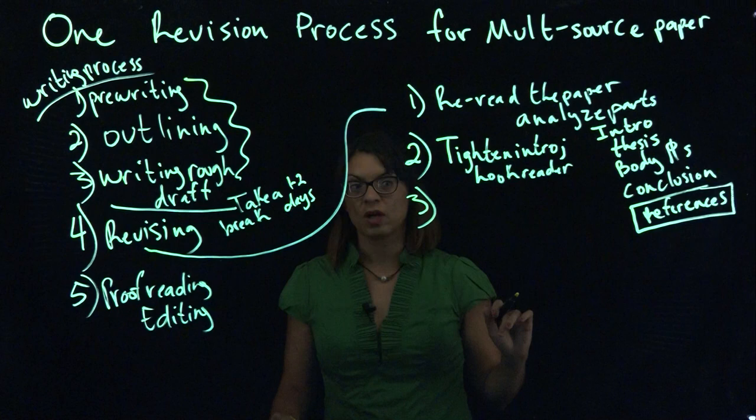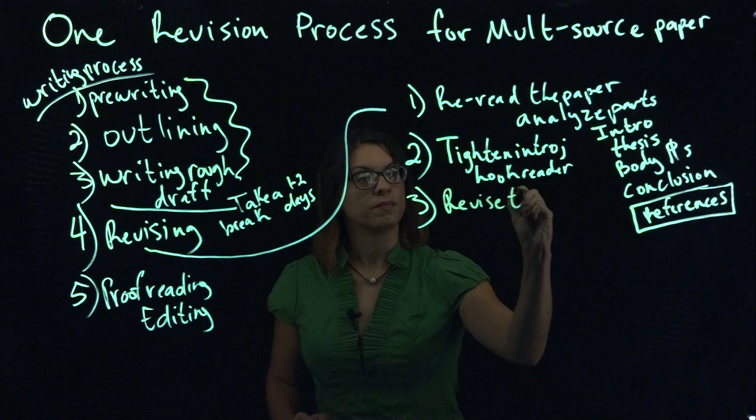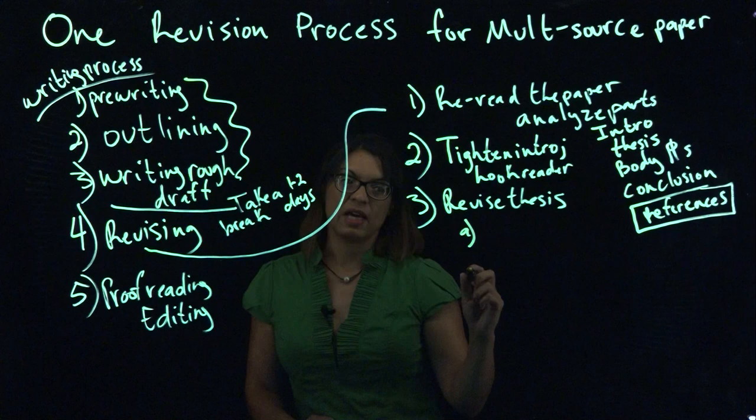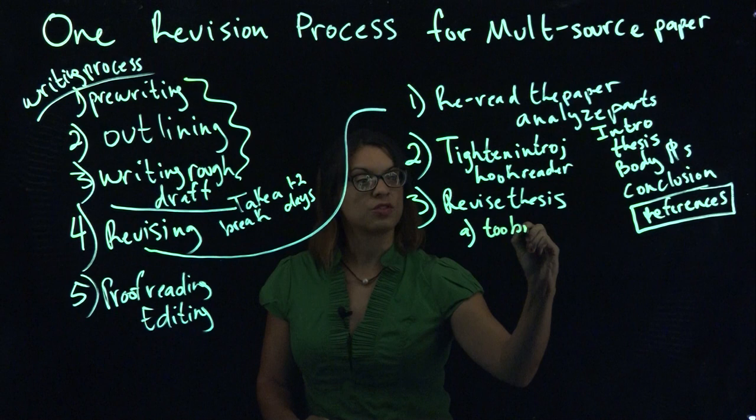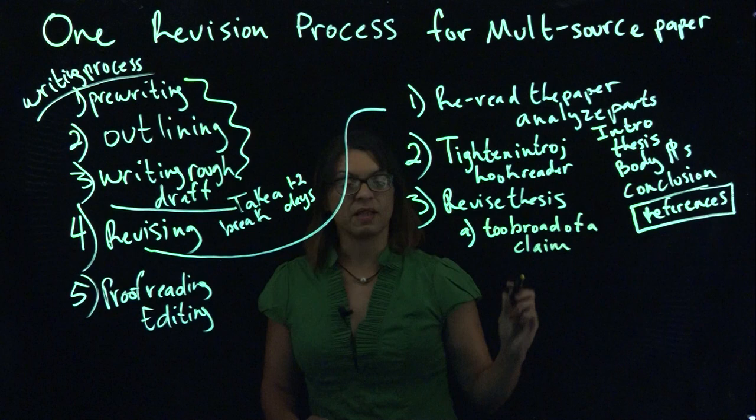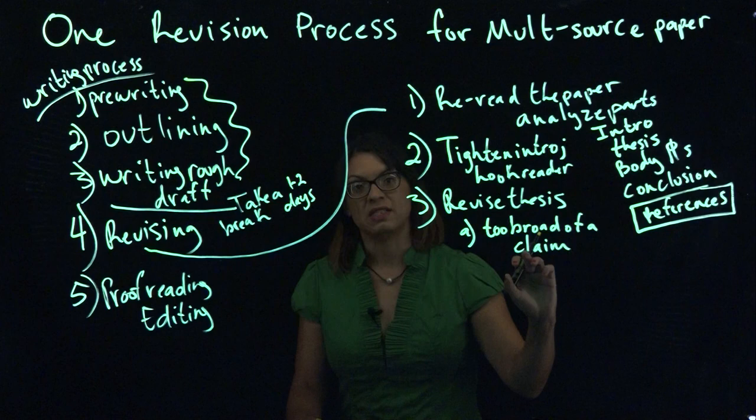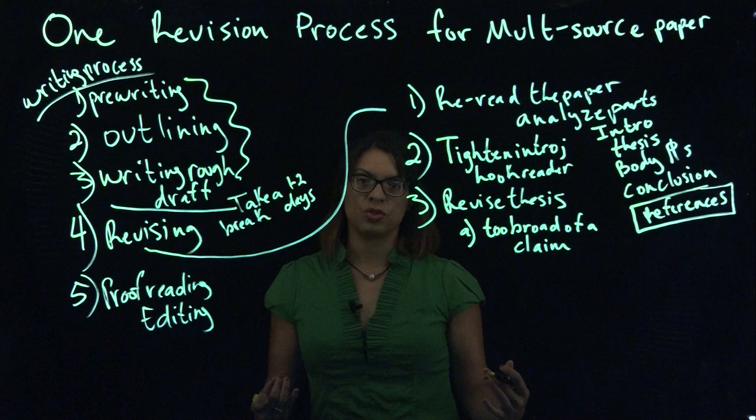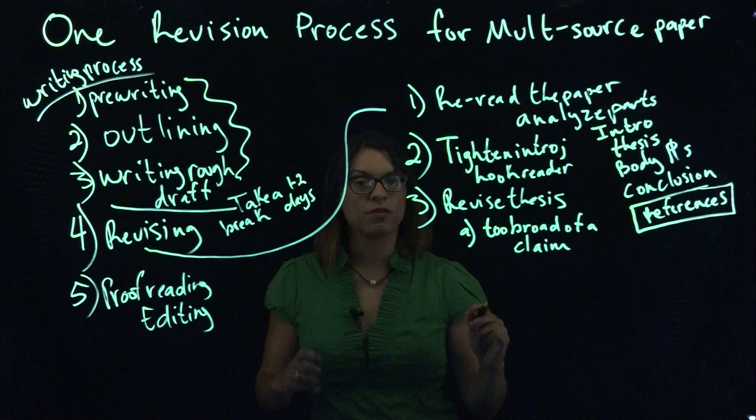Another step of revising your paper would be to revise the thesis. Ways in which a thesis can go astray would be things like your thesis makes too broad a claim. If it's too broad of a claim, if you would need a book or an encyclopedia collection in order to prove that thesis, then you need to revise it. Examples of broad thesis statements would be like racism has always existed. That would take an entire encyclopedia collection to prove.